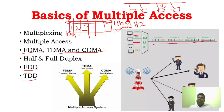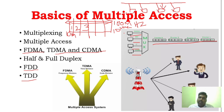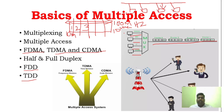You need to understand what is duplexing. You already know what is half duplex and full duplex communication. Simplex means either one device can transmit or receive — that is simplex communication. Half duplex means transmit and receive but not at the same time — for example, walkie-talkie. Full duplex communication is your mobile phone — you can transmit and receive at the same time. These concepts are very important when studying multiple access techniques.